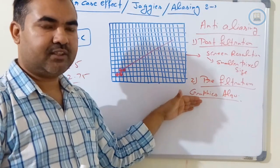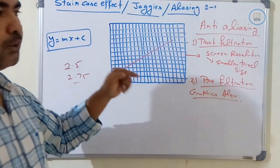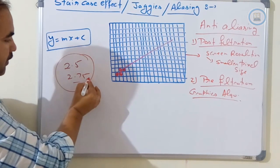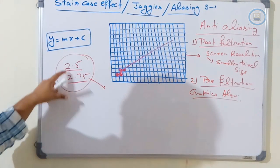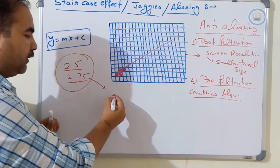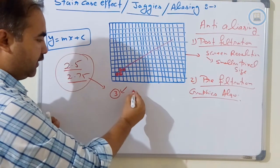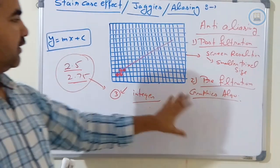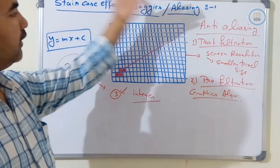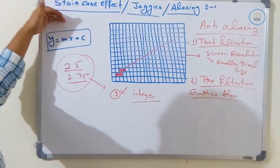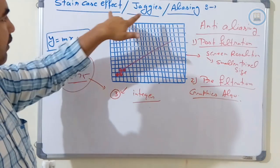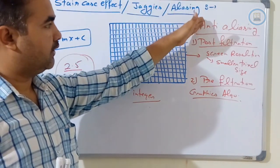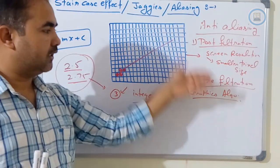In graphics algorithms, the approximation method determines which pixel should glow to best represent the shape. The problem of fractional values like 2.5 or 2.75 is resolved by generating the best integer incremental value. This is the anti-aliasing effect. The staircase effect, jaggy's effect, and aliasing effect are different names for the same problem found in different books, and anti-aliasing — using post-filtration or pre-filtration — is used to rectify it.